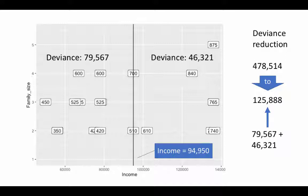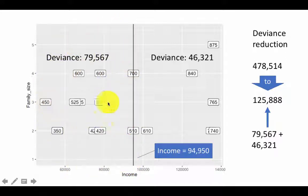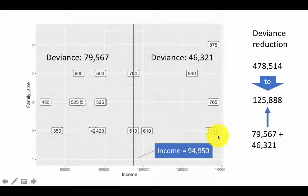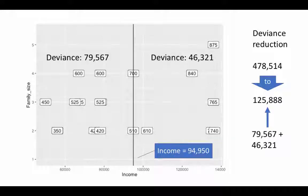If we stopped here with just a root node and one rule — income less than 94,950 versus greater than or equal to 94,950 — our prediction for any case with income less than 94,950 would be the average expenditure of that group, and for income greater than 94,950 the average of that group. This is still better than predicting the overall average for everyone. But of course we're not going to stop here — we'll split further.